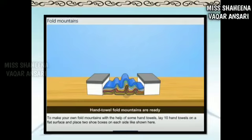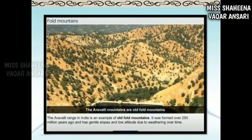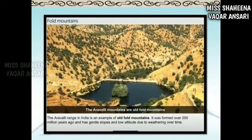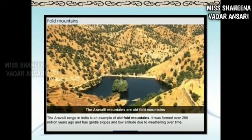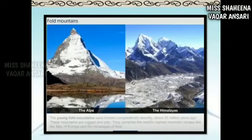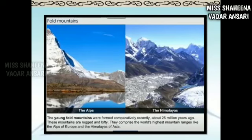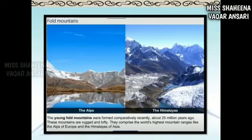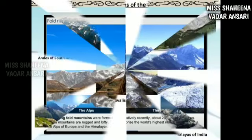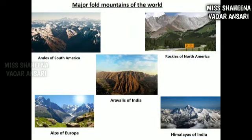Here are some pictures of old fold mountains. The Aravalli Mountains of India are old fold mountains formed over 250 million years ago, with gentle slopes and low altitude due to weathering over time. The Alps of Europe and the Himalayas of India are young fold mountains, formed comparatively recently about 25 million years ago. They are rugged — meaning rough — and lofty — meaning high. Major fold mountains of the world include the Andes of South America, the Rockies of North America, the Aravalli of India, the Alps of Europe, and the Himalayas of India.